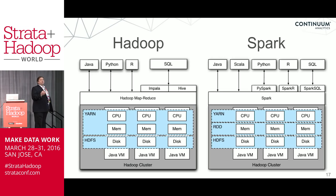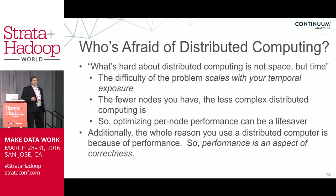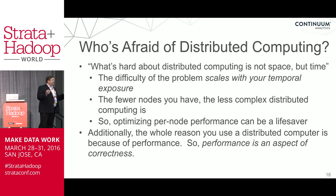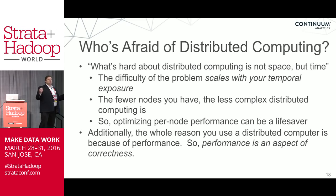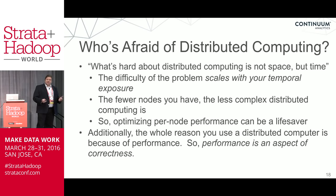What's hard about distributed computing is that you're exposed to all those details. A node goes down, and the longer your job is running, the more exposed you are — that's why it's temporal in nature. If you can do things quickly, in 15 seconds or less than a minute, then not so bad. But if you're exposed for hours, you have to start worrying. The fewer nodes you have, the less complex distributed computing is. So optimizing performance on a single node turns out to matter. That's why we talk about scale-up and scale-out together — to really effectively scale out, you've got to make sure you're getting the performance out of each node first. Performance is an aspect of correctness.